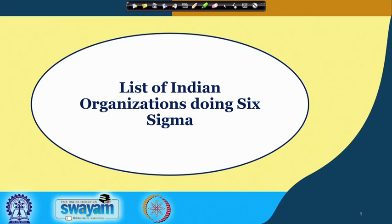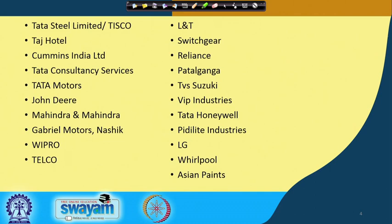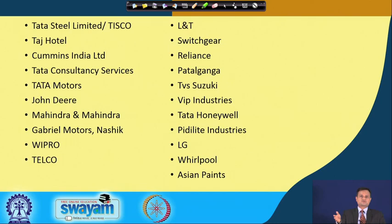Here is a representative list of Indian organizations doing Six Sigma: Tata Steel (Tisco), Taj Hotels (service industry), Cummins India, Tata Consultancy Services (IT sector), Tata Motors (automobile), John Deere, Mahindra and Mahindra, Gabriel Motors Nashik, Wipro, Telco, L&T, TVS Suzuki, Pedelite Industry, LG, Whirlpool, and Estrain Paints. The spectrum is large — manufacturing, automobile, service, paint, and chemical industries — showing that Six Sigma benefits are not restricted to one segment.